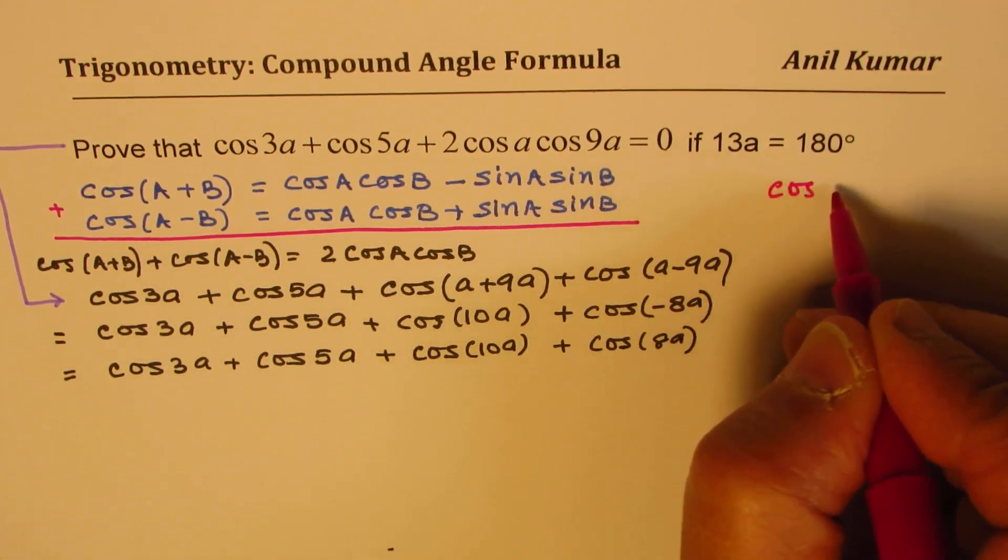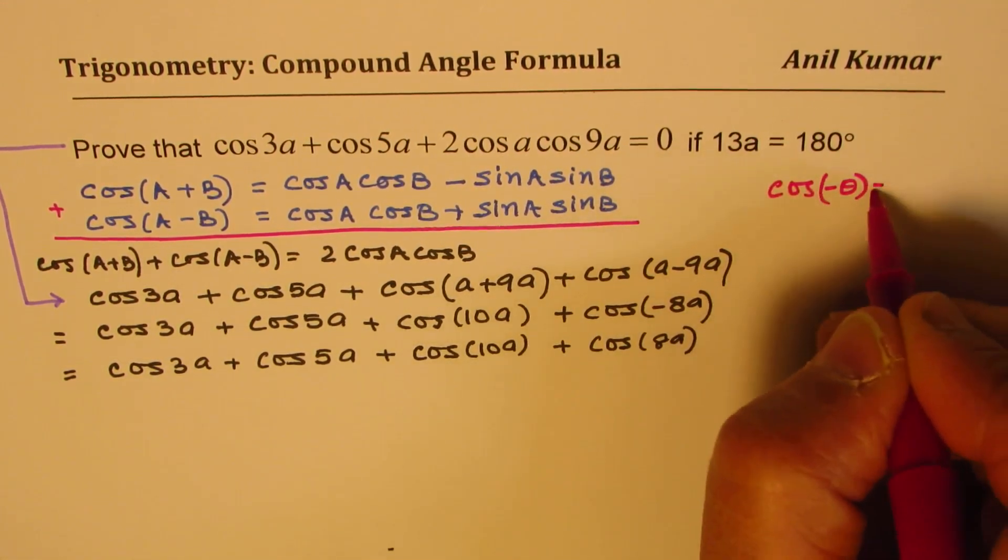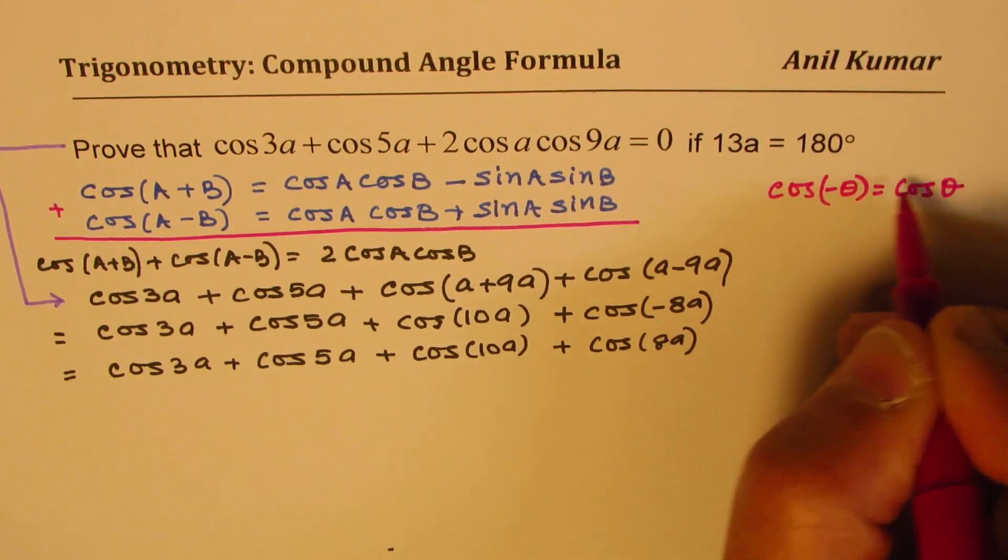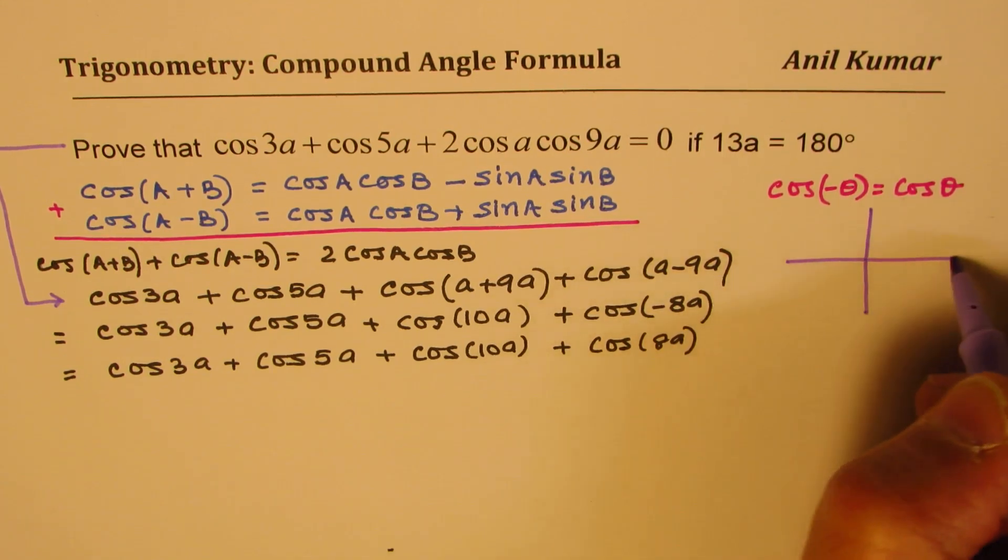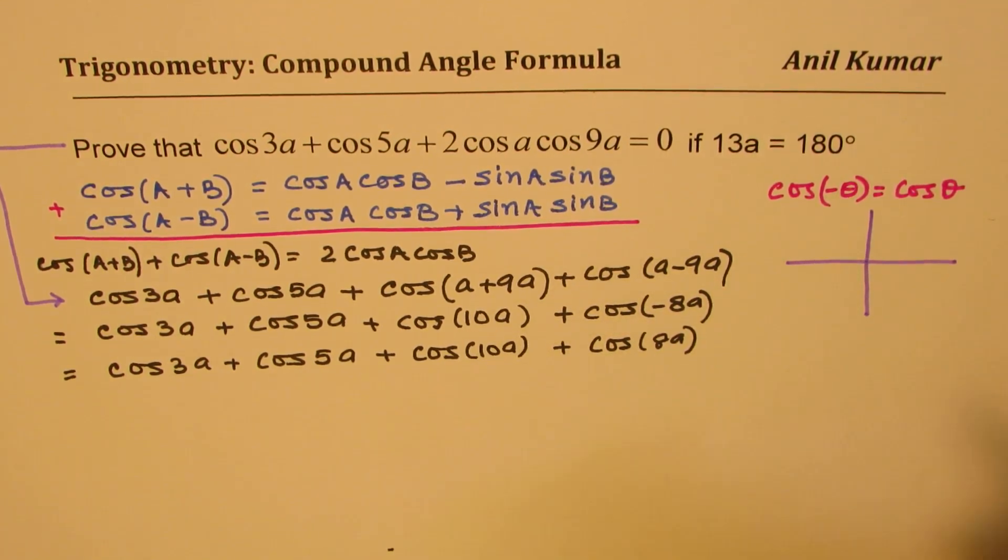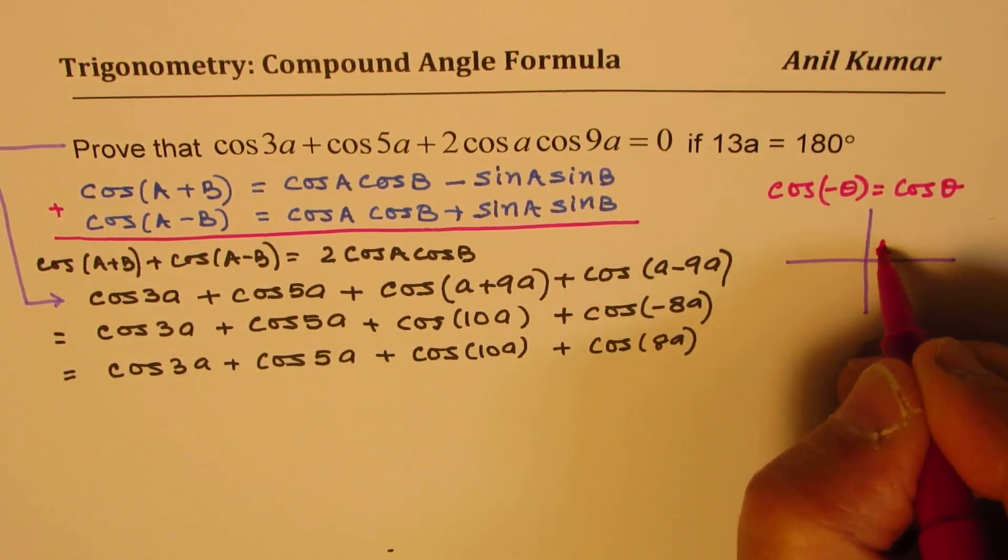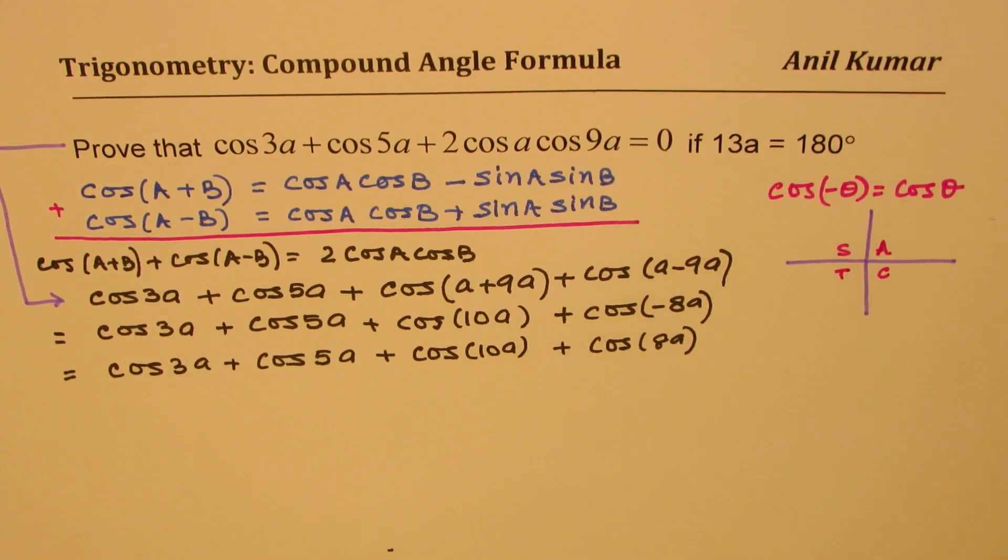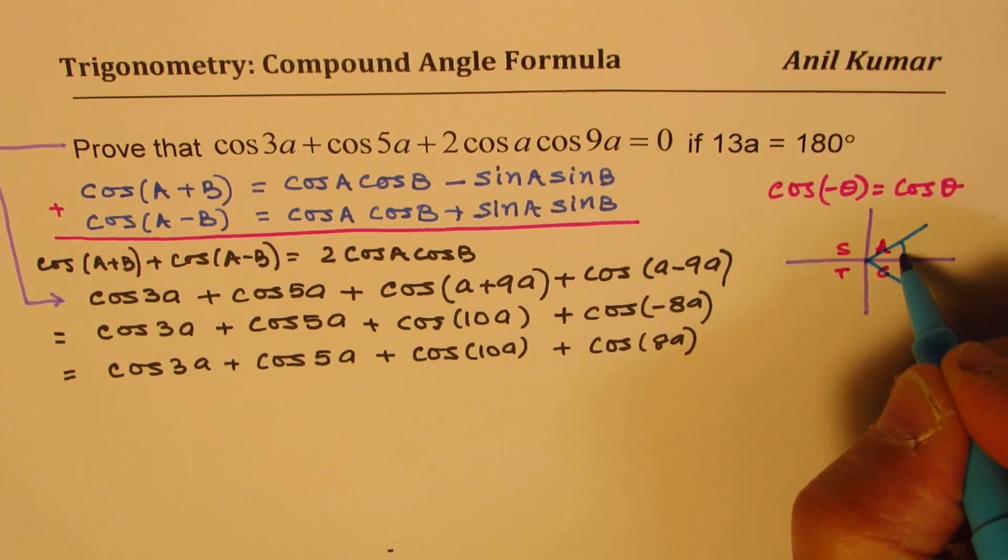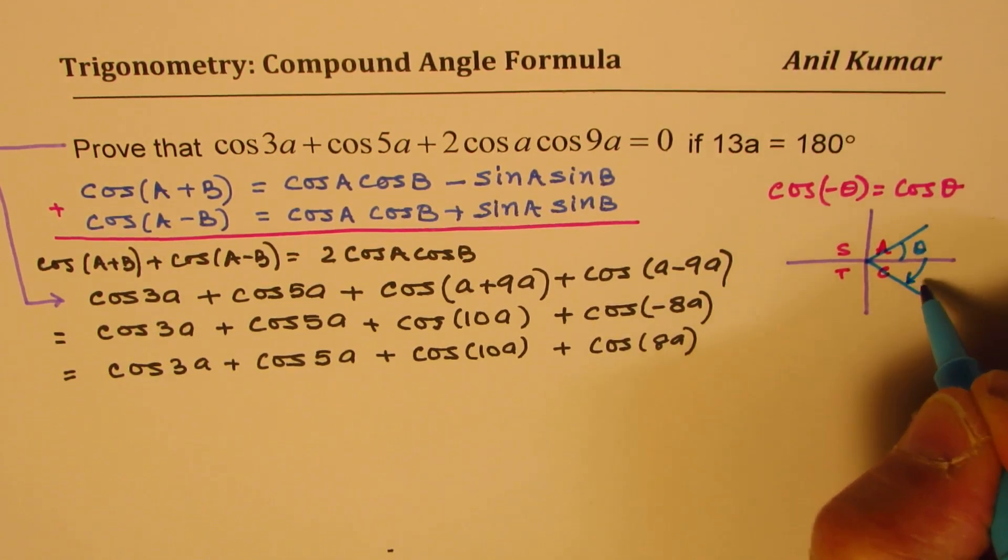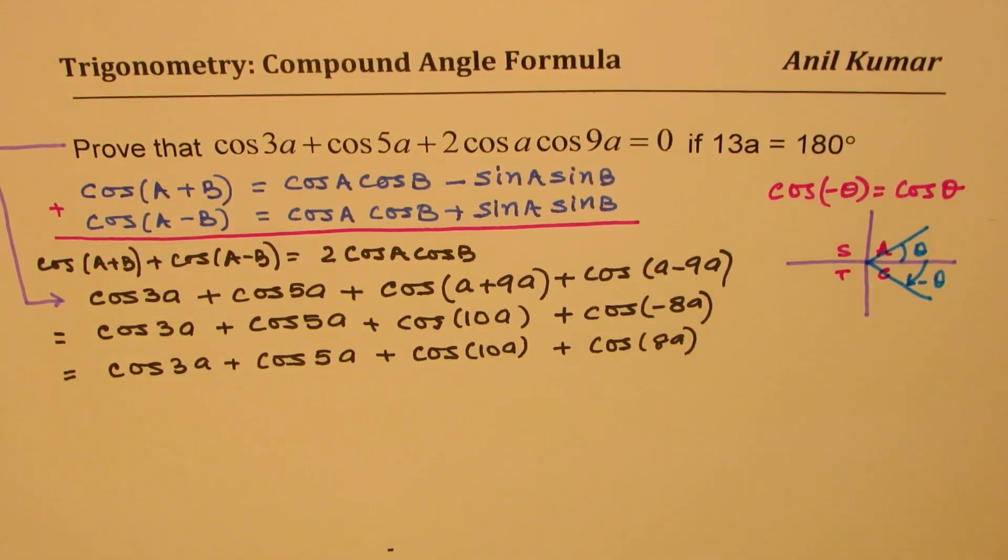We know cos of minus theta is equal to cos theta. Cos is an even function and to give you a view here we know the cos curve. So as you can understand for any angle theta, cos has the same value. This is minus theta. So they have the same value. Now let's move forward.